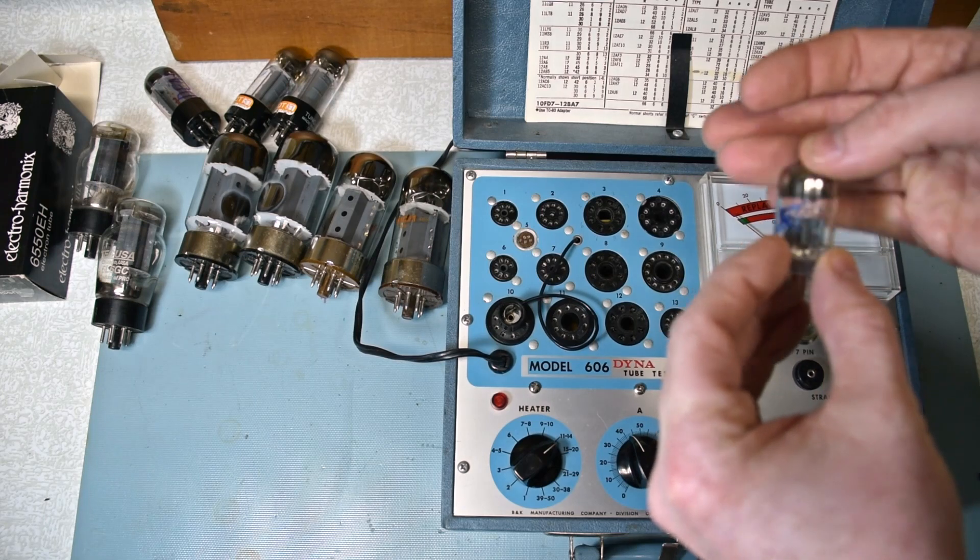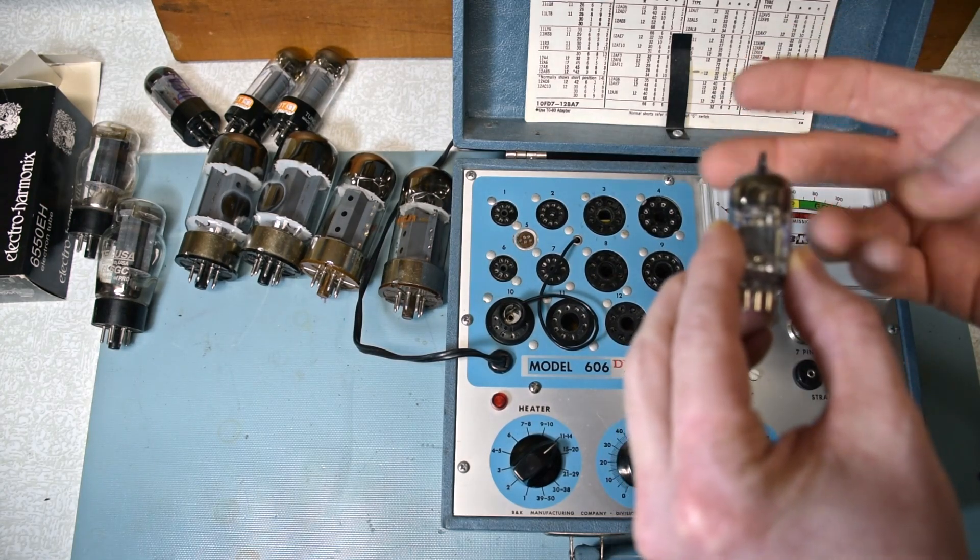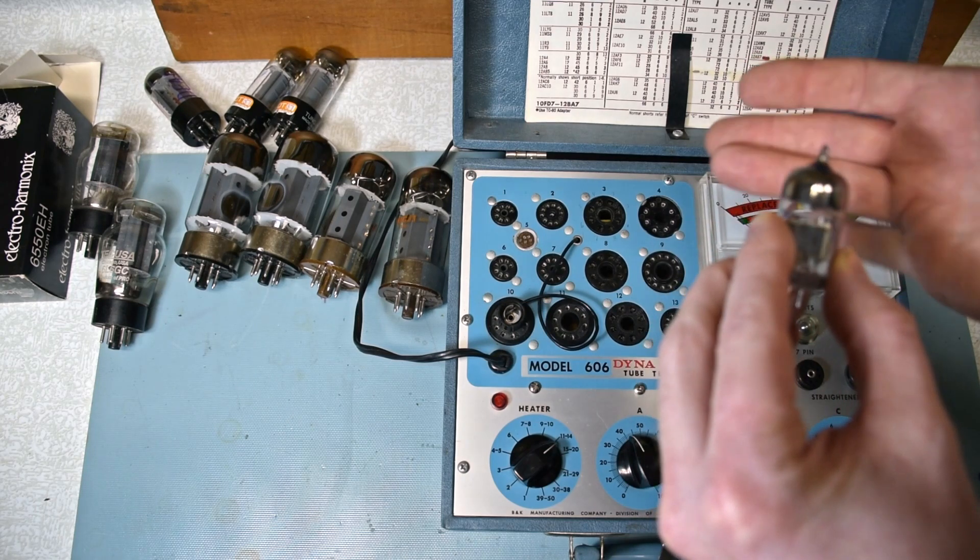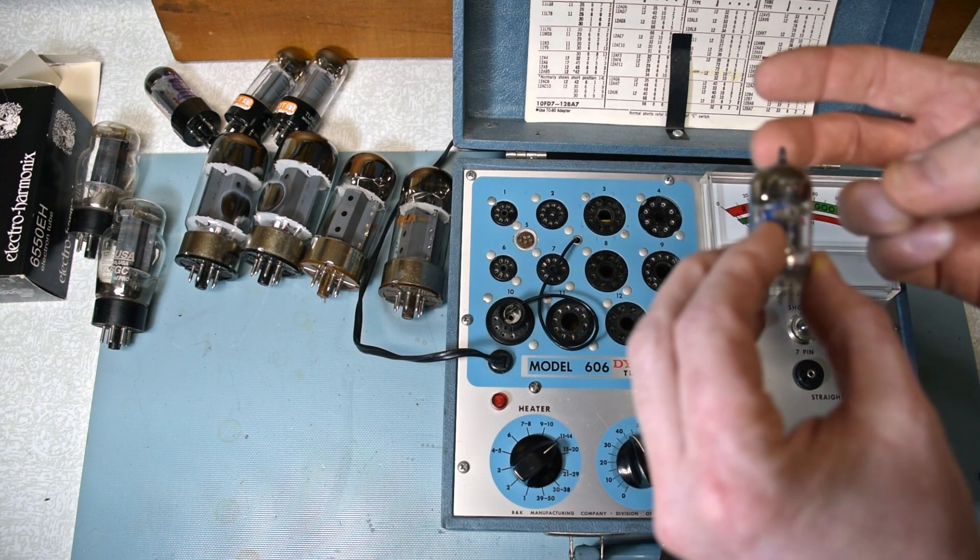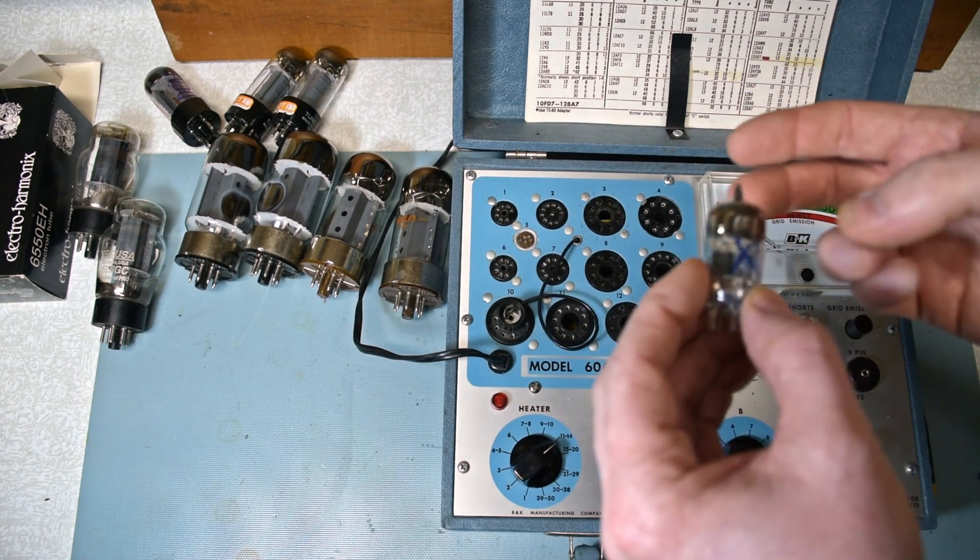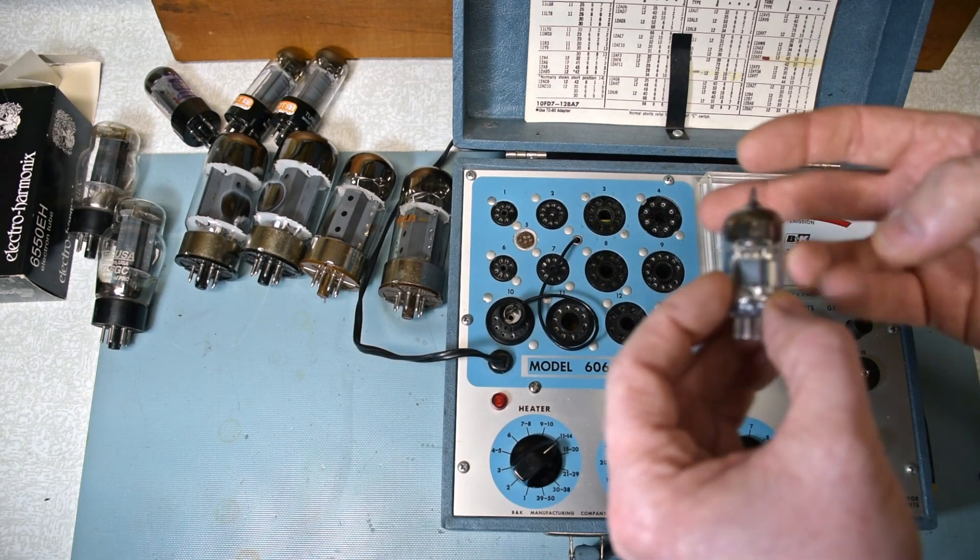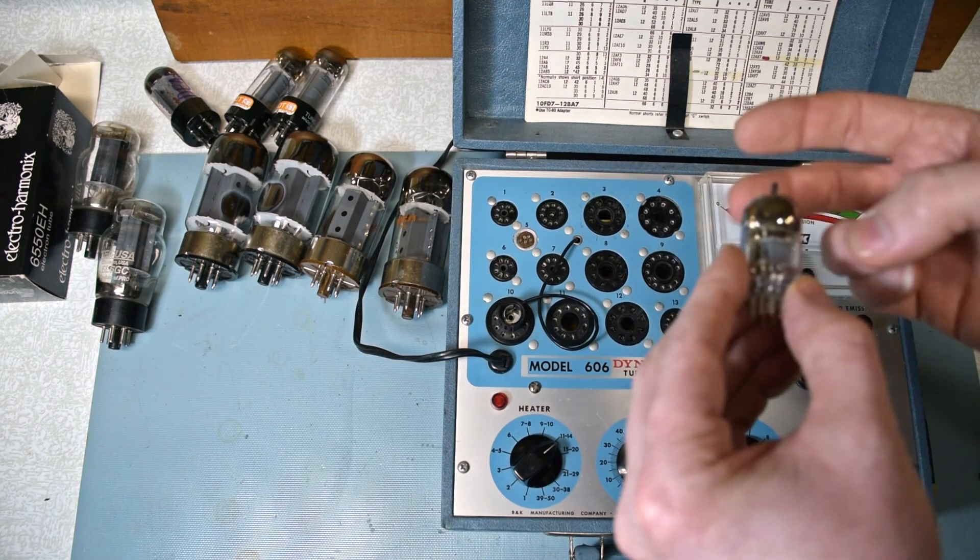You can check for microphonics. You can often hear if it's going to be microphonic just by listening to it, tapping it with your finger or fingernails. If you get like a high pitch. Often if this is in a preamp circuit, that same pitch will ring through the amp when there's vibration on the amp. This one actually sounds pretty good.